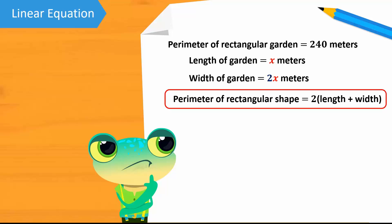Replacing the values in this formula and solving, we get 240 meters is equal to 2 multiplied by x plus 2x. Adding the like terms in the brackets, we get 2 multiplied by 3x which is equal to 6x. If 6x is equal to 240, x is equal to 40. This means that the length of the rectangular garden x is equal to 40 meters.